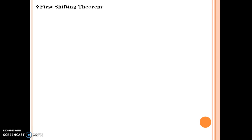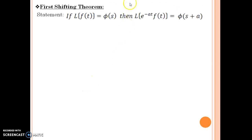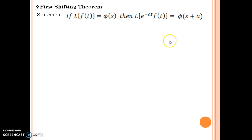Sometimes this first shifting theorem is also known as the first shifting property — the name does not affect the statement at all. The statement is: if Laplace of f(t) is equal to phi(s), then Laplace of e to the power minus at times f(t) is nothing but phi of s plus a.